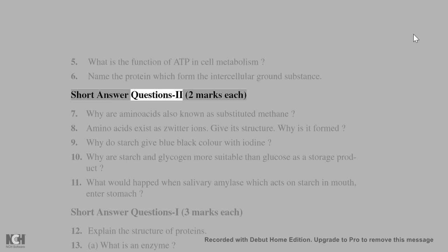Short answer questions 2, two marks each. 7. Why are amino acids also known as substituted methane? 8. Amino acids exist as zwitterions. Give its structure. Why is it formed? 9. Why does starch give blue-black color with iodine? 10. Why are starch and glycogen more suitable than glucose as a storage product? 11. What would happen when salivary amylase which acts on starch in mouth, enters stomach?